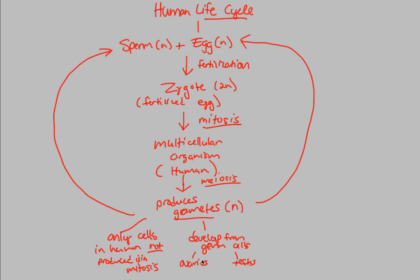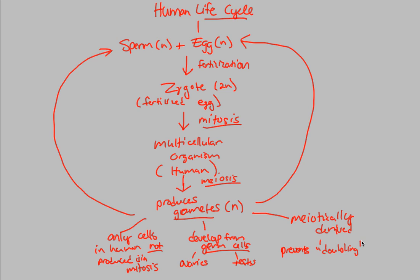Both of these are found — ovaries in females and testes in the male counterpart. This is where all the meiosis is happening, where the production of gametes is happening, developing from a germ line of cells occurring at the ovaries and the testes. And I want to finish by saying that these gametes that are produced are definitely meiotically derived — meaning they underwent meiosis in order to form into sperm and egg. And because they underwent meiosis, they underwent this idea of preventing the doubling of chromosome number.